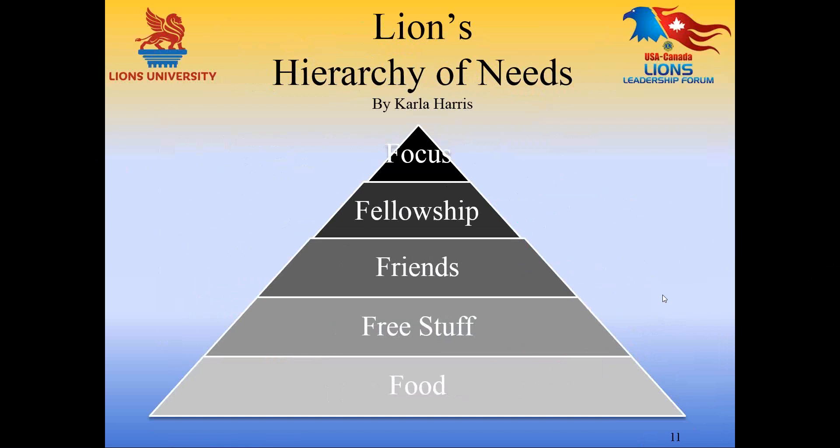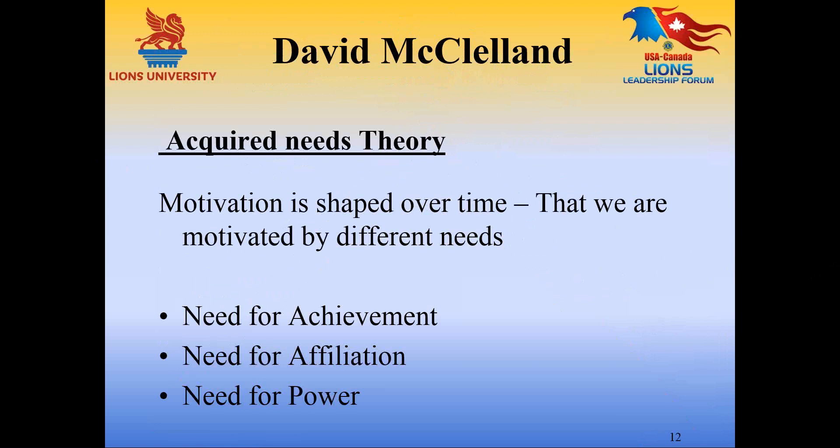There's another theory I want to review before we go into recognition: David McClelland's Theory of Acquired Needs. As Lions leaders, it's really important we understand these areas of motivation so we can decide what kind of recognition fits what person, and provide the right recognition at the right time to keep them in Lions longer. The whole theory is that motivation is shaped over time by different needs. People have needs in three areas: need for achievement, need for affiliation, and need for power.